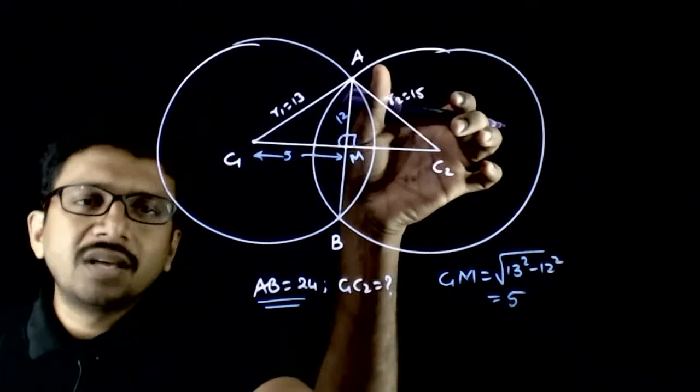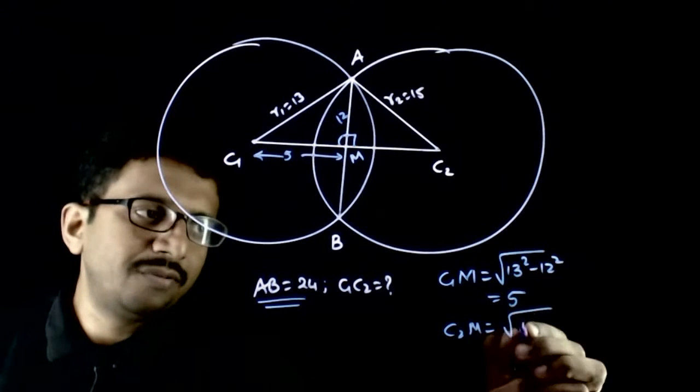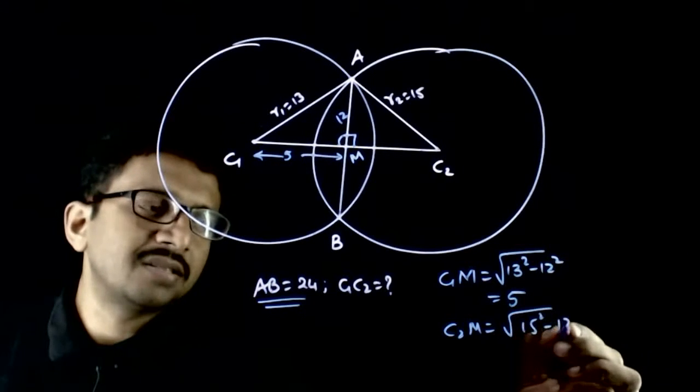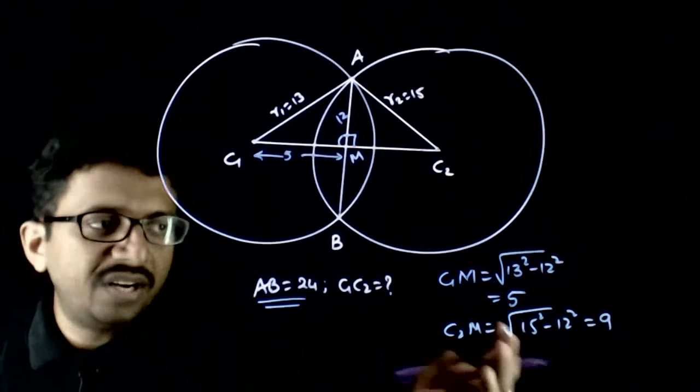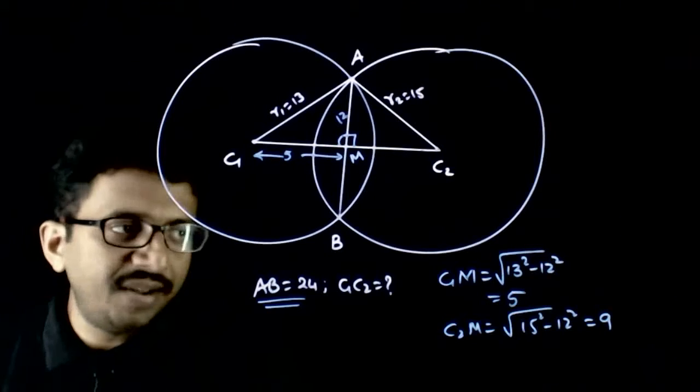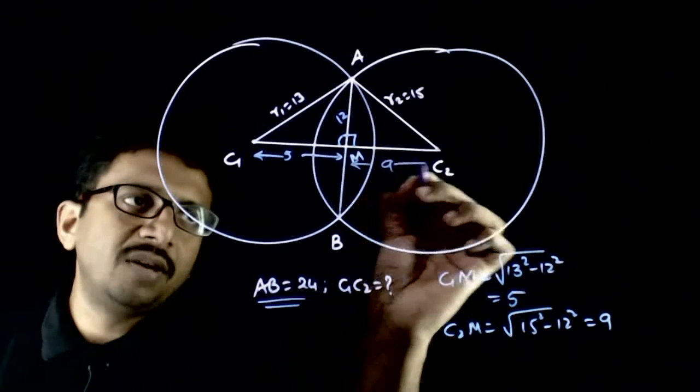Similarly, C2M is root of 15 square minus 12 square. 225 minus 144 is equal to 81. Root 81 is equal to 9. So this length will be equal to 9.